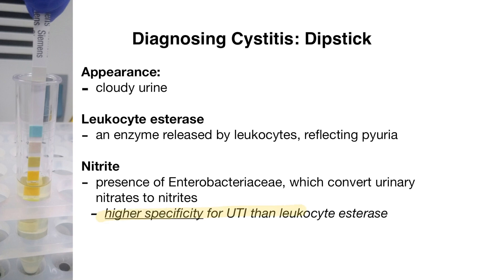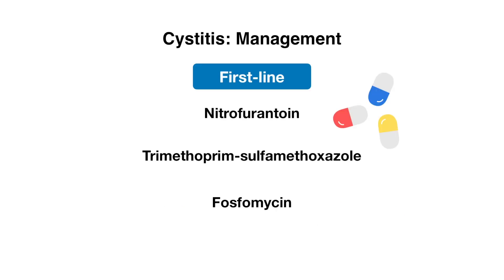Because of this, nitrite has a higher specificity for UTI than leukocyte esterase. When we diagnose a urinary tract infection, which antibiotics do we use? There are three first-line agents to keep in mind: nitrofurantoin or Macrobid, trimethoprim-sulfamethoxazole or Bactrim, and then fosfomycin. Make sure to keep these in mind because they are high yield and are useful in a clinical setting as well.